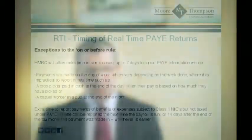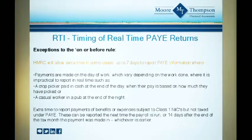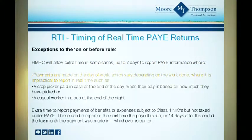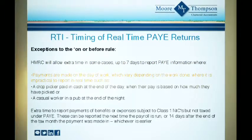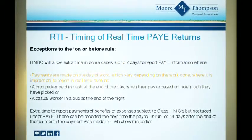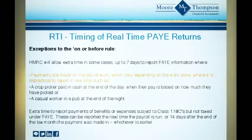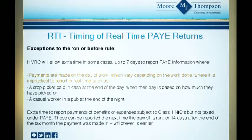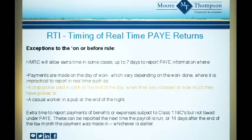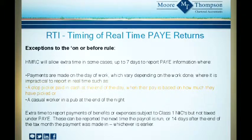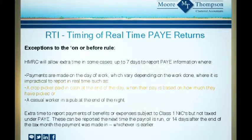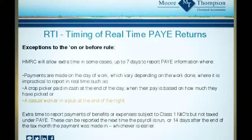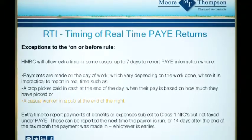HMRC will allow extra time in some cases, up to 7 days, to report PAY information. Examples here typically relate to casual workers paid cash on the day or night of work where the pay is variable and it is impractical to report in real time. An example would be a crop picker paid in cash at the end of the day where their pay is based on how much they have picked, or a casual worker in a pub at the end of the night.